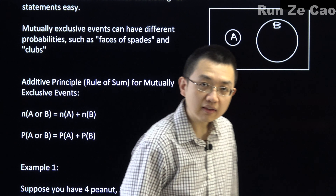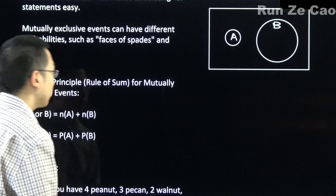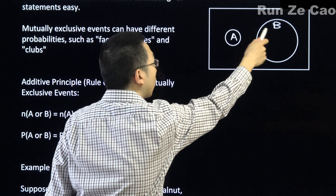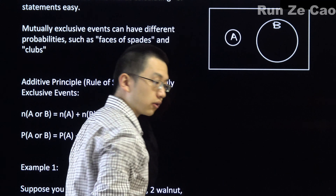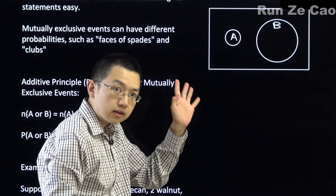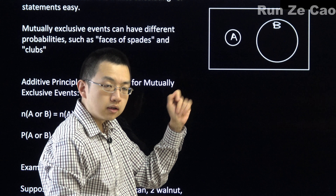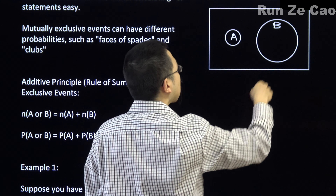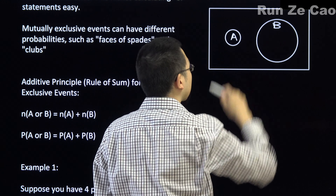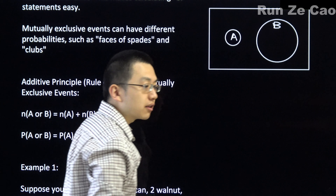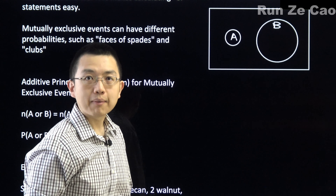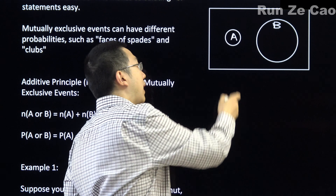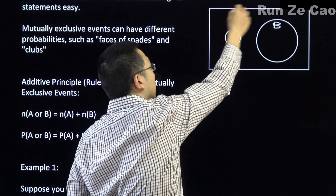You can have mutually exclusive events that have different probabilities, such as face cards of spades — which are 3 cards: the jack, queen, and king of spades — and clubs, which are 13 cards. Here we can label this A, and we can label this B.